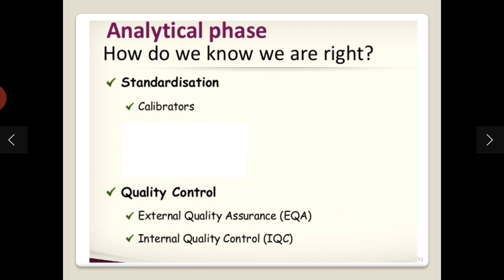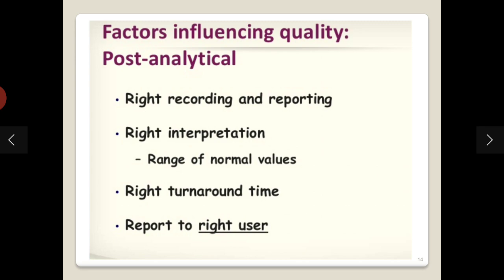In the analytical phase, we run the samples, perform standardization, run quality controls, and do calibration using calibrators to standardize the instrument. Quality is checked by two assessments: external quality assurance and internal quality control. In the post-analytical area, factors include correct recording, reporting, right interpretation of results, right turnaround time, and releasing the report to the right user.